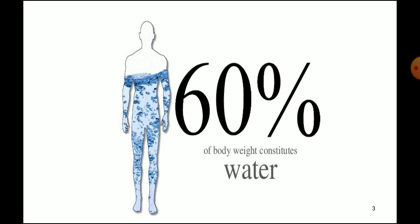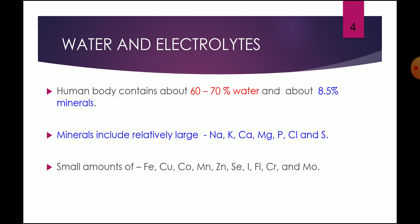The water constitutes about 60% of the weight of the body. The human body contains about 60-70% of water and about 8.5% of minerals. Minerals include relatively large amounts of sodium, potassium, calcium, magnesium, phosphorus, chloride and sulfur, and small amounts of iron, copper, cobalt, manganese, zinc, selenium, iodide, fluoride, chromium and molybdenum. This is the distribution of water and electrolytes in the body.